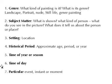Your book starts with a set of seven things to identify when looking at an image. First, what kind of painting is it? — landscape, portrait, still life, nude? Second, subject matter: what is shown? Third, where is it — what's the location? Fourth, what's the historical period? Fifth, what's the time of year or season depicted? Sixth, what time of day is it? And seventh, what's the particular event, instant, or moment depicted in the image?